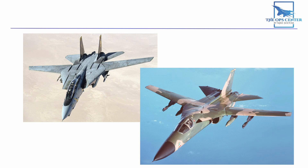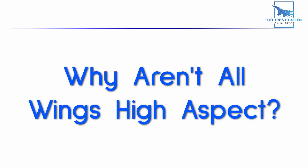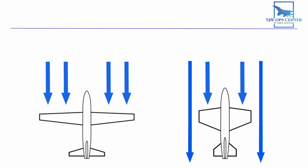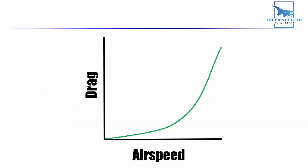This leads to an interesting question: if high aspect ratio reduces induced drag, then why aren't all wings high aspect? The answer is simple — increasing aspect ratio also increases parasite drag, because you have more of the wing hanging out in the airflow. Since parasite drag increases with speed, high-performance aircraft want low aspect ratios to keep parasite drag low, while aircraft that mostly operate at slow speeds, like gliders, are better off with a high aspect ratio.